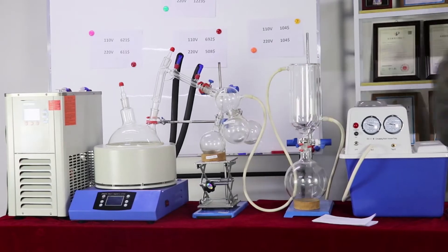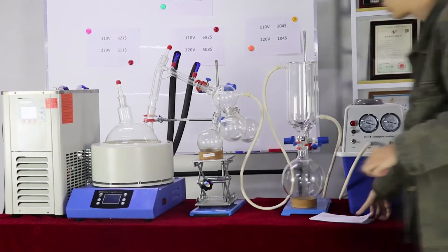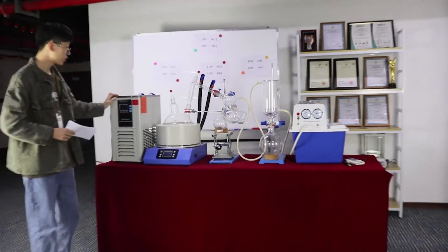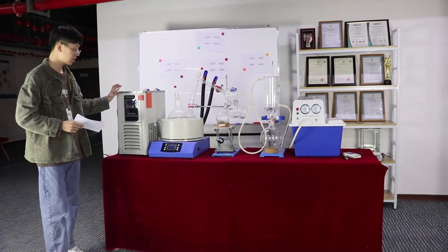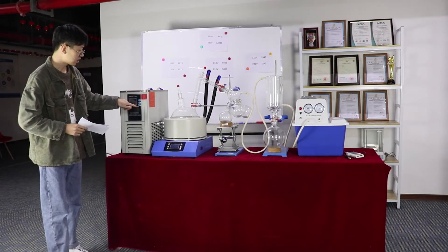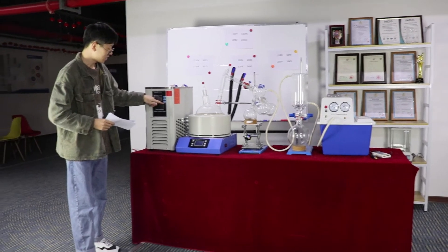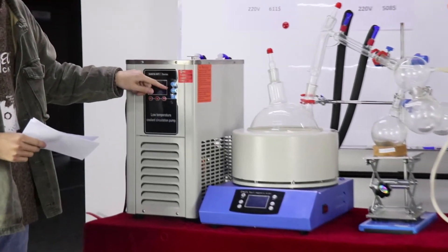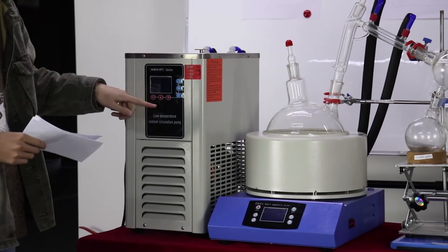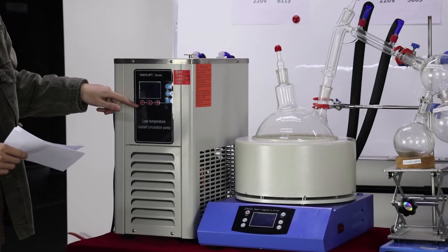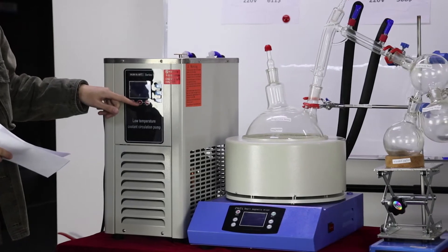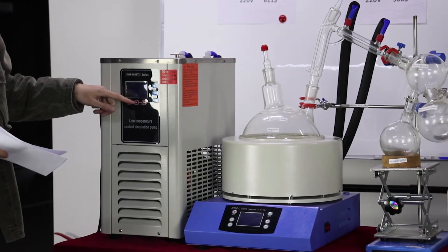This is the cooling chiller. This is the switch, refrigeration, and cycle. This is the setting. It can adjust the temperature and time.